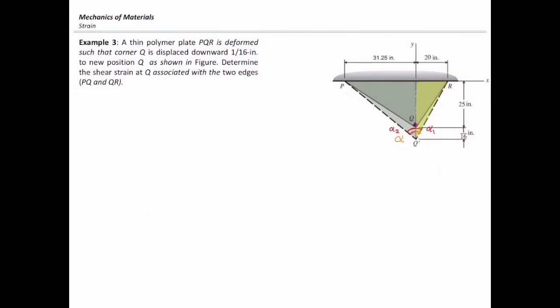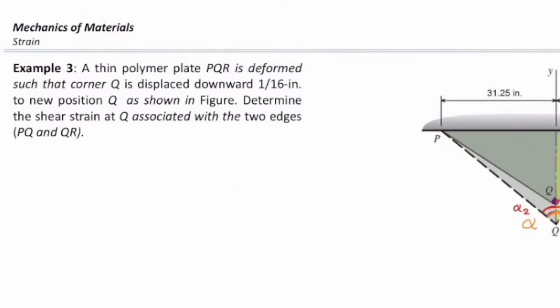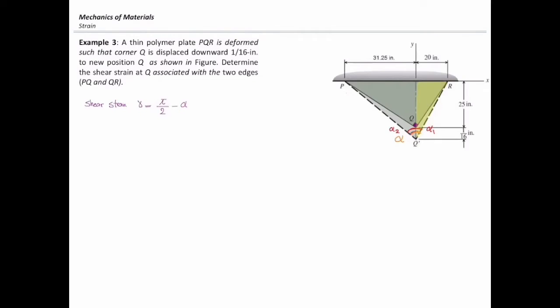Let me briefly discuss how we can solve this problem. We need to determine the angle after deformation. I will call the angle after deformation as alpha. The initial angle is pi over 2, so the shear strain in this case would be pi over 2 minus alpha.